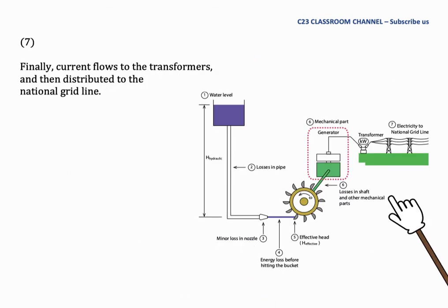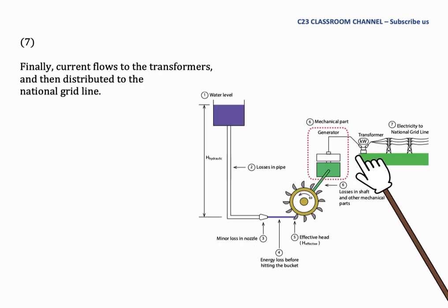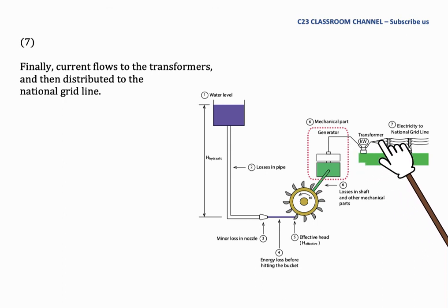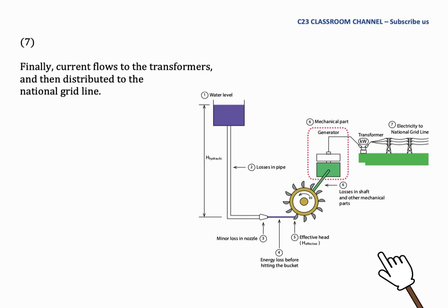Finally, the electrical power flows to the transformers and is distributed to the national grid line. This is the basic concept and operation of a Pelton wheel in a common application.